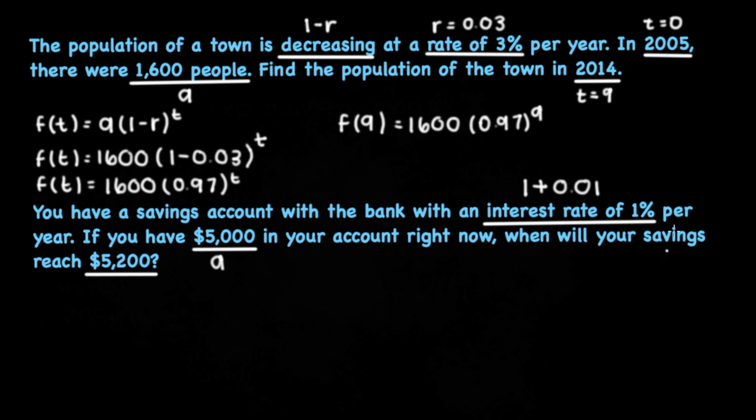And when will our savings reach $5,200? That's going to be our f of t. So our exponential growth model is f of t is equal to a times 1 plus r to the t power.